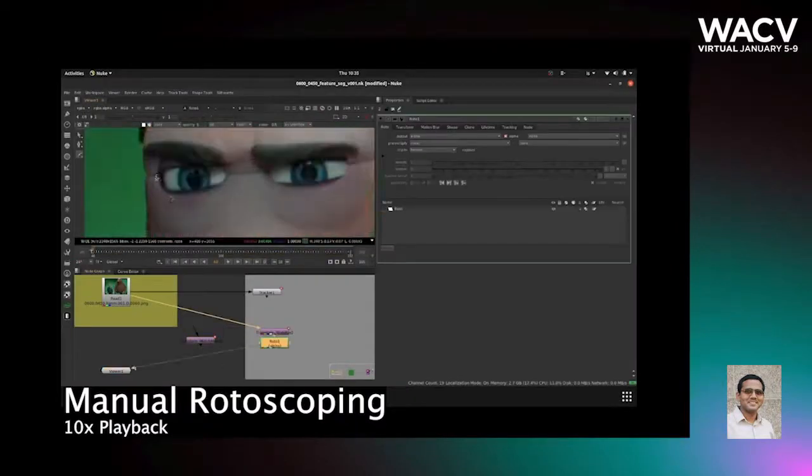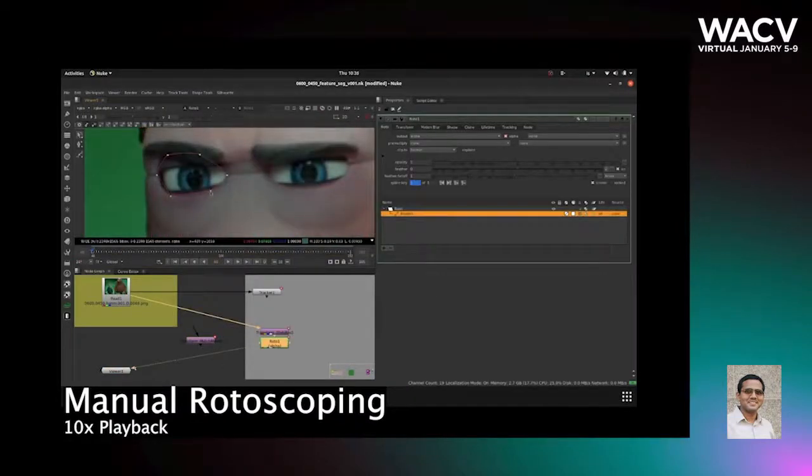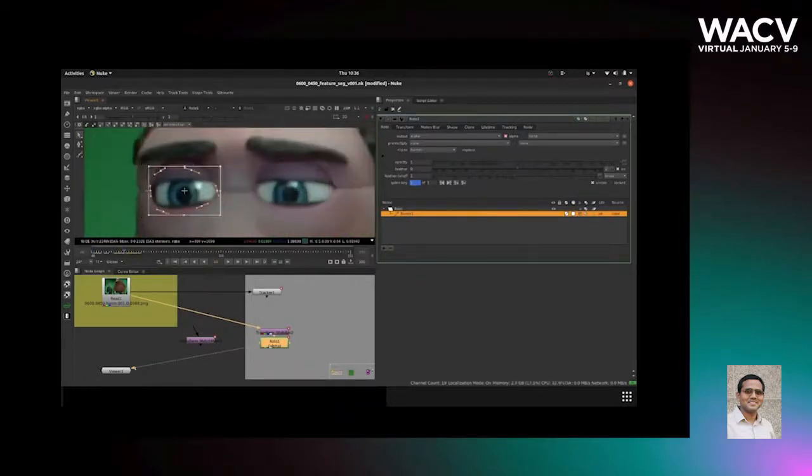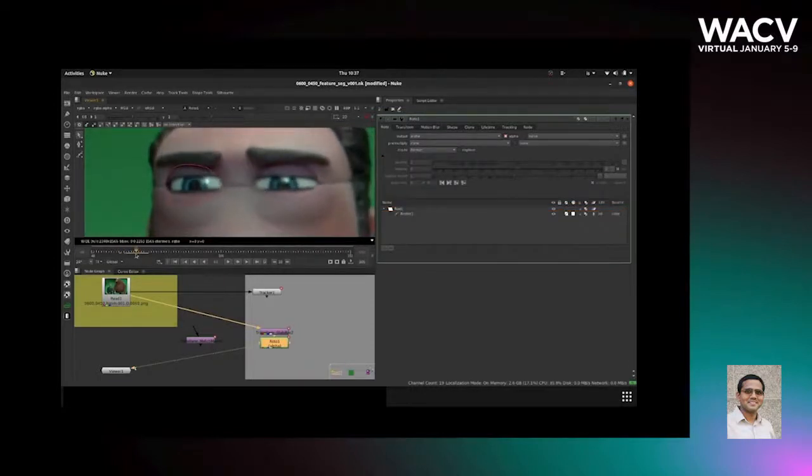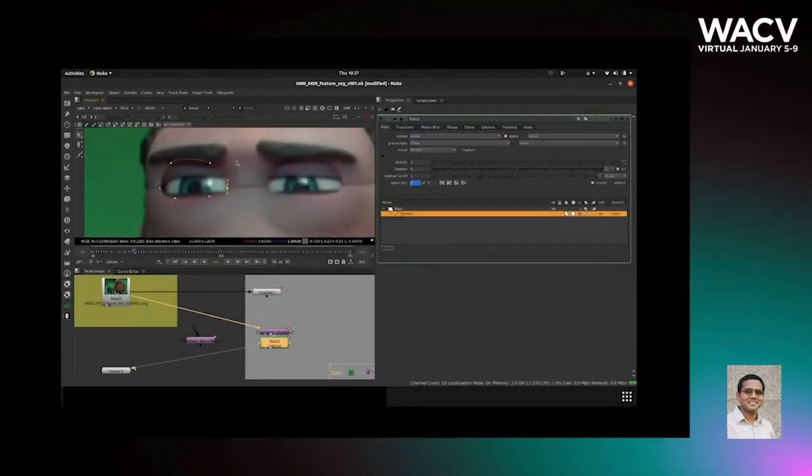The rotoscoping process is largely manual today and requires a significant amount of time from the artists. In this paper, we focus on rotoscoping on eyes, eyebrows, nose bridge seams, and temple seams. However, the methods we present here have also been tested on other facial features, such as the mouth and sideburns.